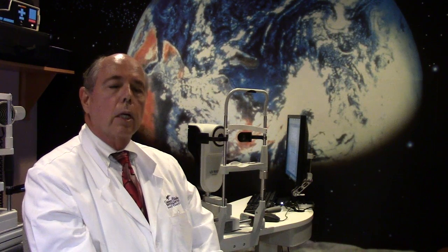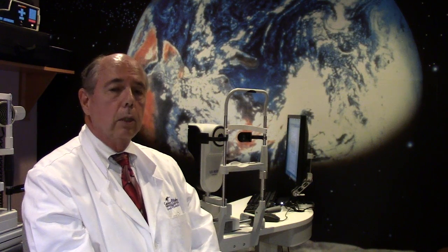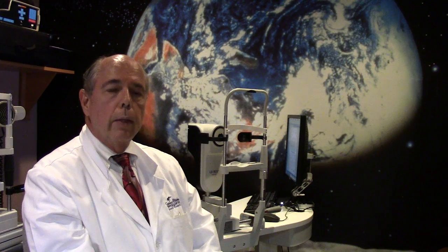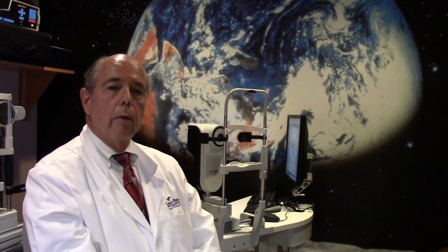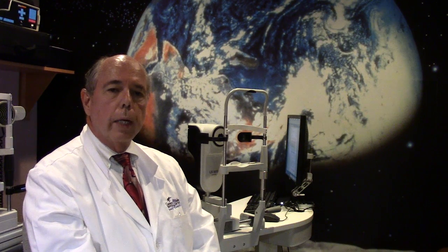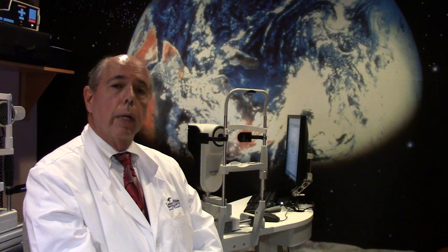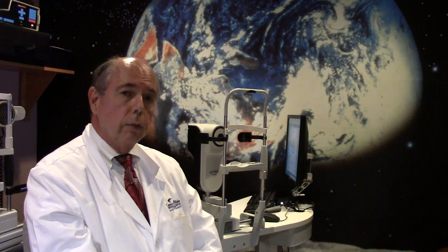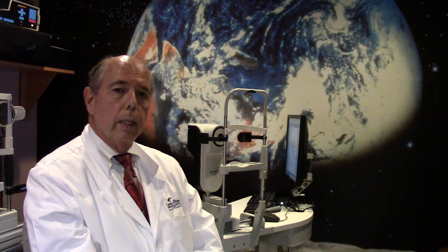And also the companies that make these intraocular lenses that are toric or astigmatism lenses have a formula as well that we then go to their website put in all the measurements we've got on the patient and then it prints out a strength of toric intraocular lenses that we can place in this person's eye to correct their astigmatism and vision whether they're nearsighted or farsighted. And so that's what we did in this case.